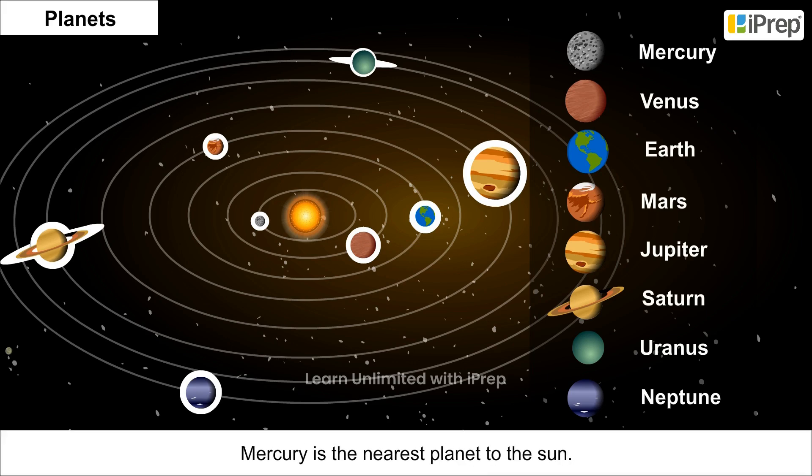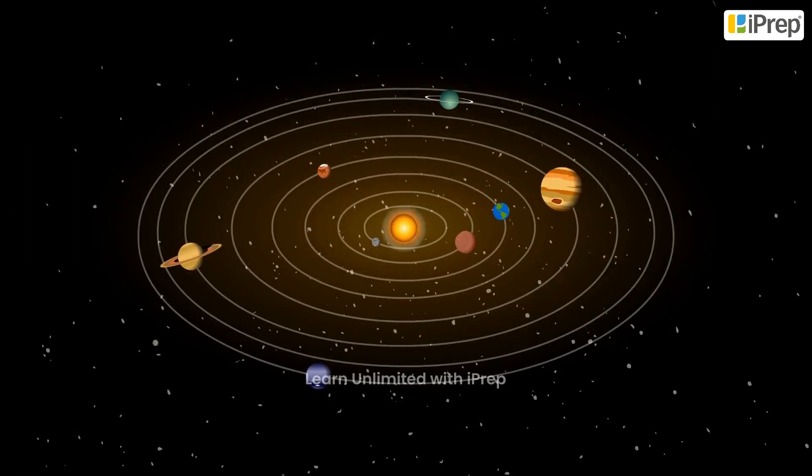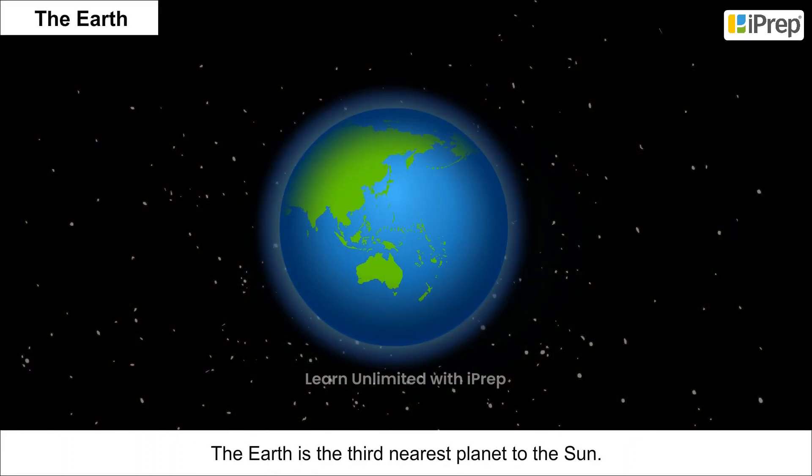Mercury is the nearest planet to the Sun. The Earth is the third nearest planet to the Sun.